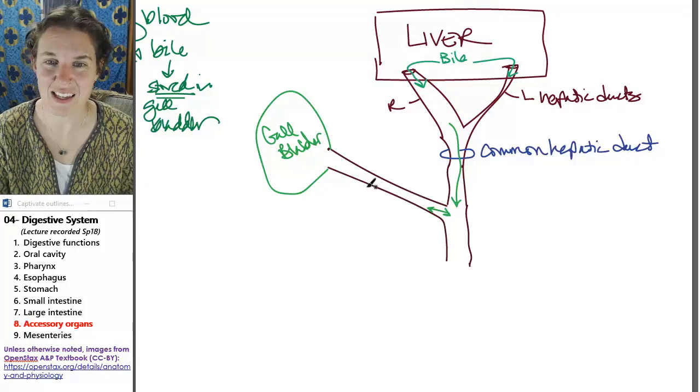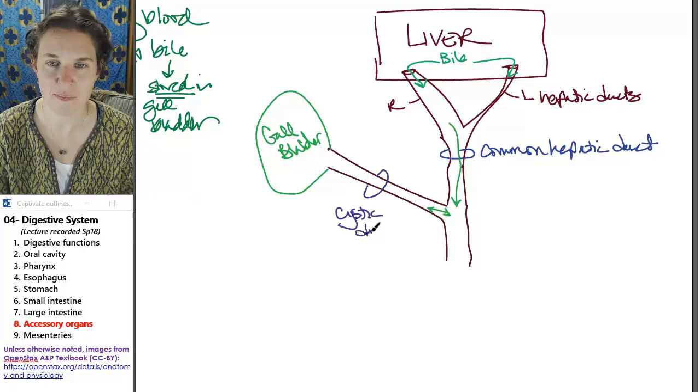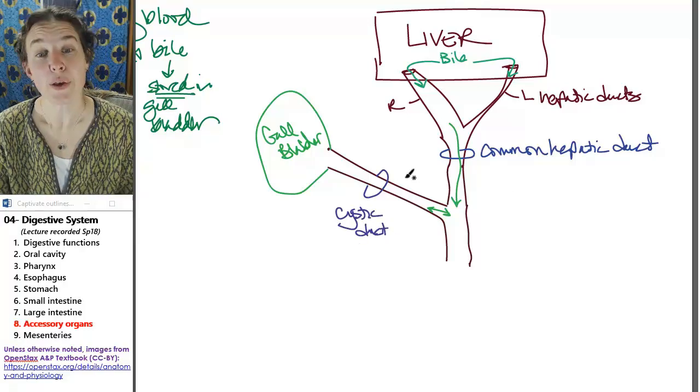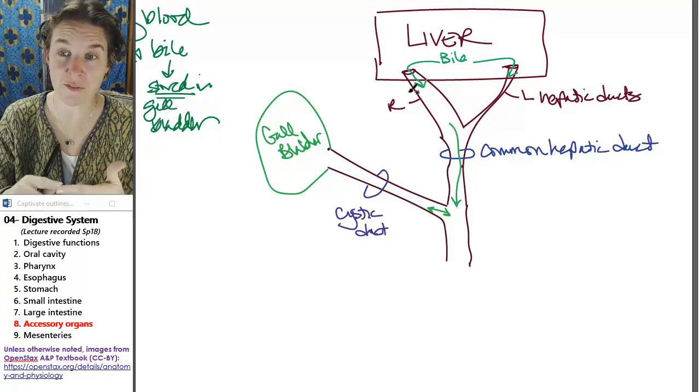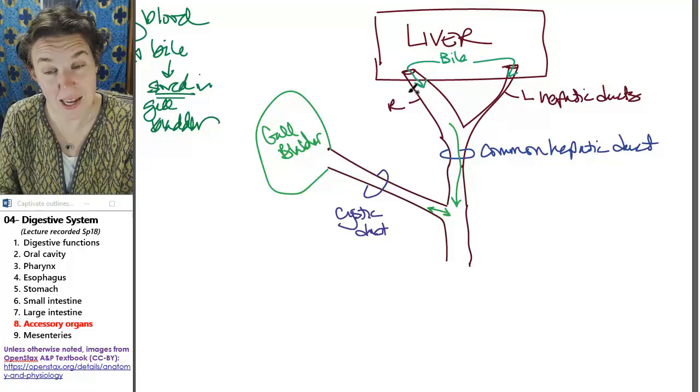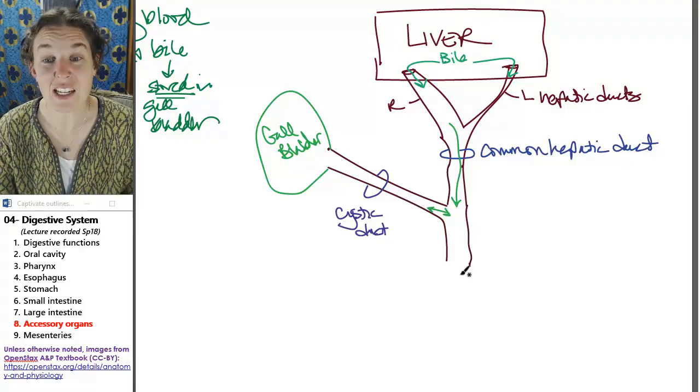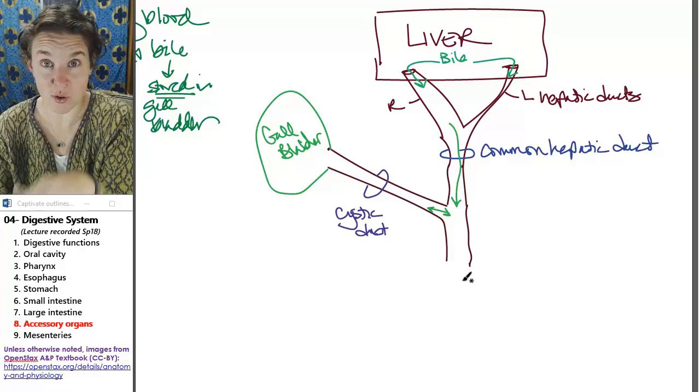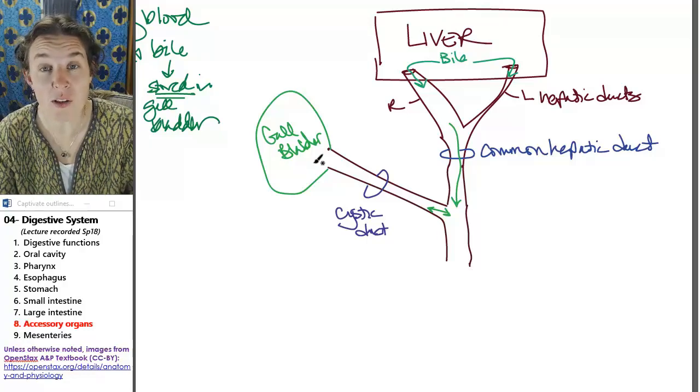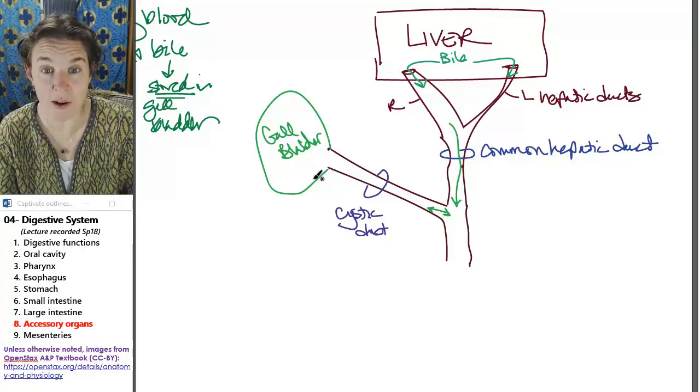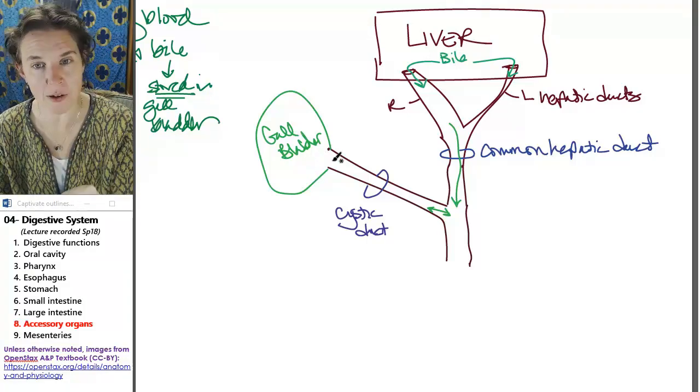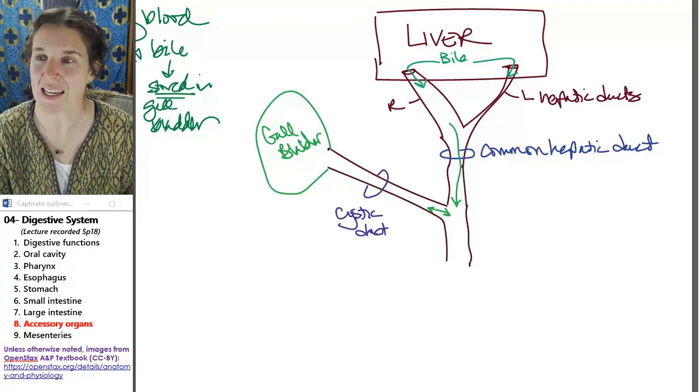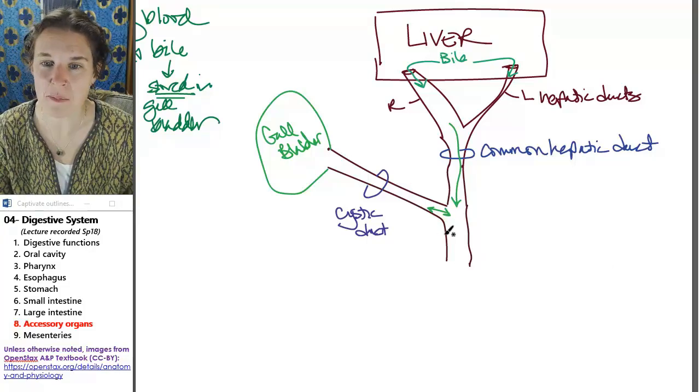This is the gallbladder. This is the cystic duct. So bile produced in the liver travels down the left or right hepatic duct into the common hepatic duct. It then can travel down to the duodenum or it can go up to the gallbladder and be stored. Bile can also be secreted from the gallbladder and travel down the cystic duct and into the common bile duct.